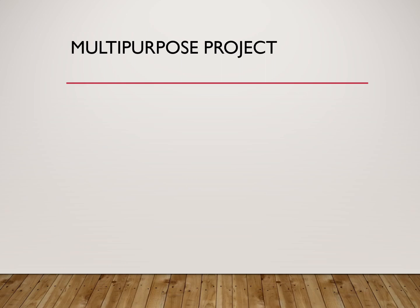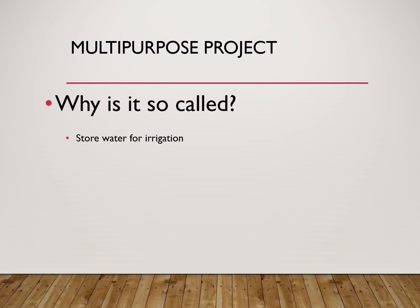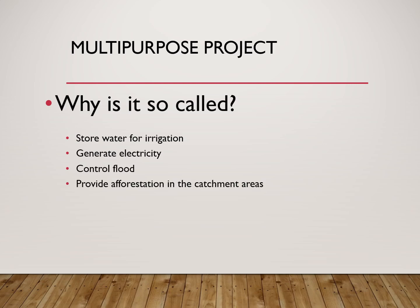The last method by which irrigation is done is by setting up multipurpose projects, also known as dams. These projects are known as multipurpose because they serve many purposes: they can store water for irrigation, they generate electricity by allowing water to fall from a greater height through the dams, and they can also control floods — excess water from rivers can be transferred into the dams.